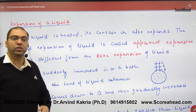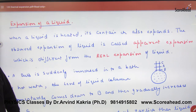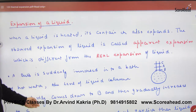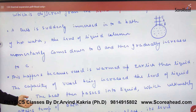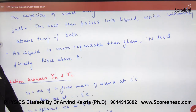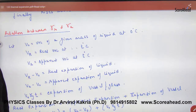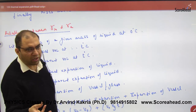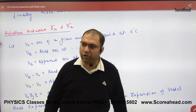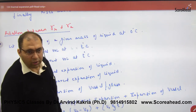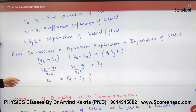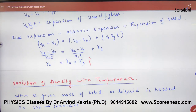That means expansion is of two types: one apparent, and one real. The difference between real and apparent has been explained. This is written in the topic. When liquid is heated, we use volume expansion, and gamma is also of two types: one is real, and one is apparent.